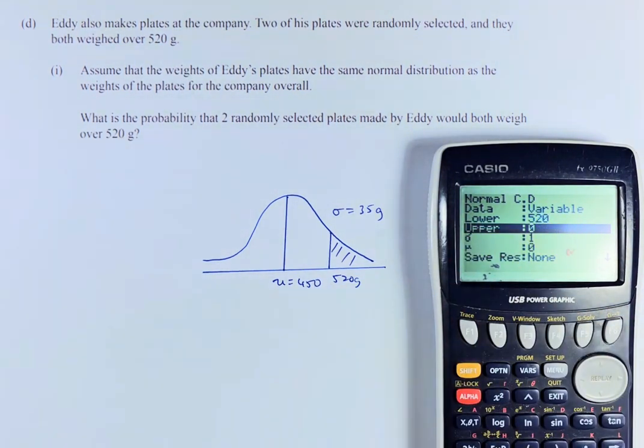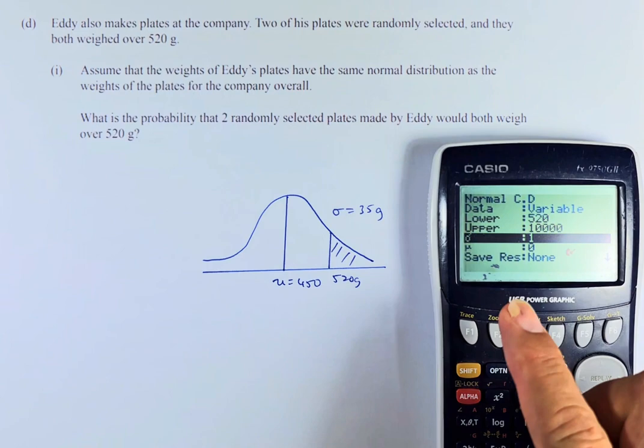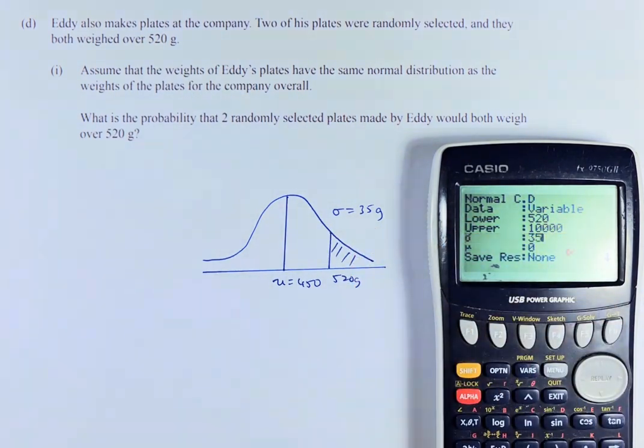Execute. Upper is where it's going to end. It could be any number to this end. So you can put 10,000 or whatever big number you like. New is sigma. So sigma, the standard deviation is 35. And the mean is going to be 450. Execute. And don't forget to execute two times.